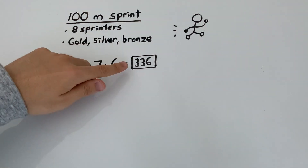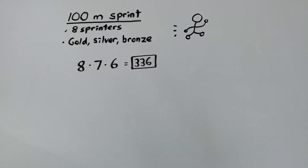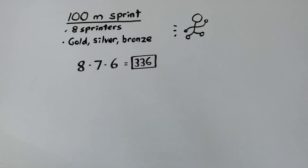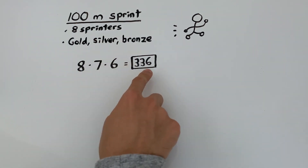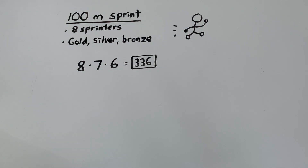This answer of 336 is correct when all sprinters are equally matched and have an equal chance at getting a medal. But if one of these sprinters just happened to be Usain Bolt, then our answer would actually change. We're going to solve that problem in another video, but the answer would be a lot less than 336 because Usain Bolt is pretty much guaranteed gold.